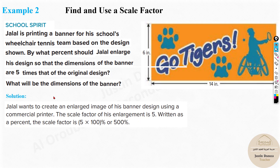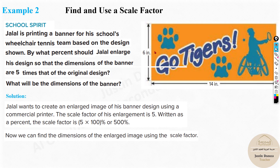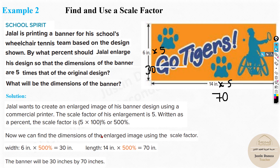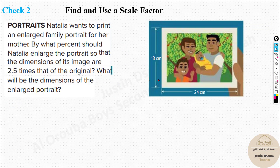Just multiply each dimension by 5: 6 times 5 is 30, and 14 times 5 is 70. So the banner will be 30 inches by 70 inches. The percentage enlargement is 500%, because 5 times 100 equals 500%. That's how we solve this problem.